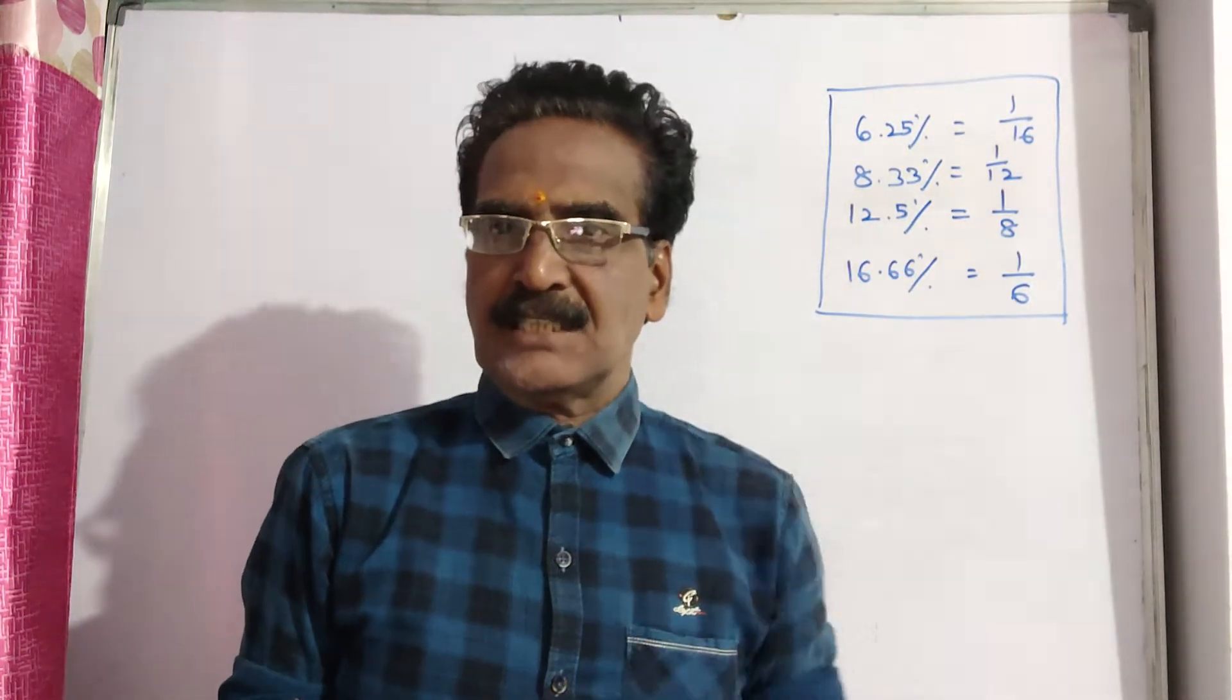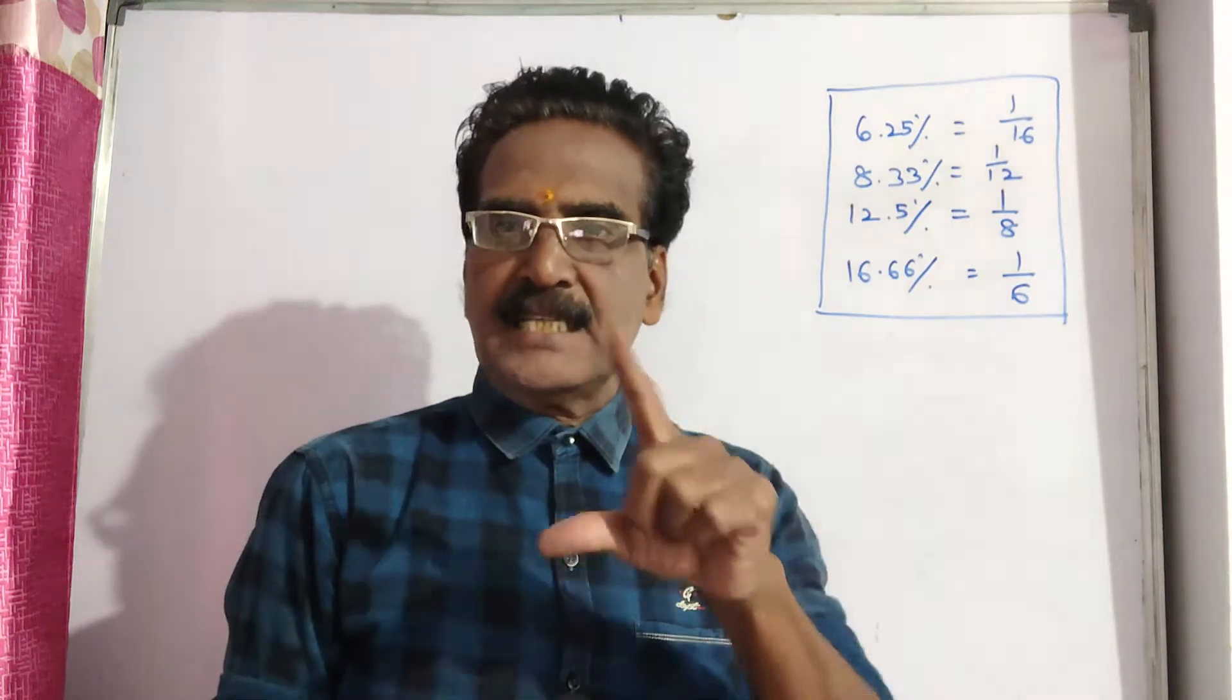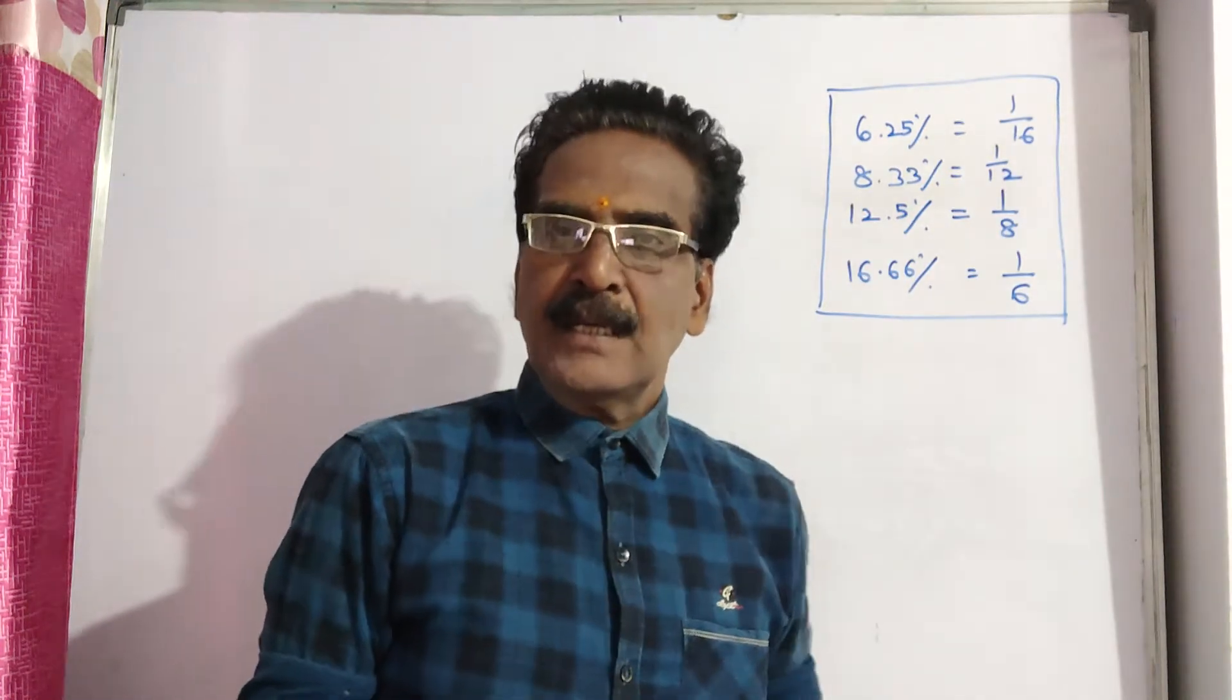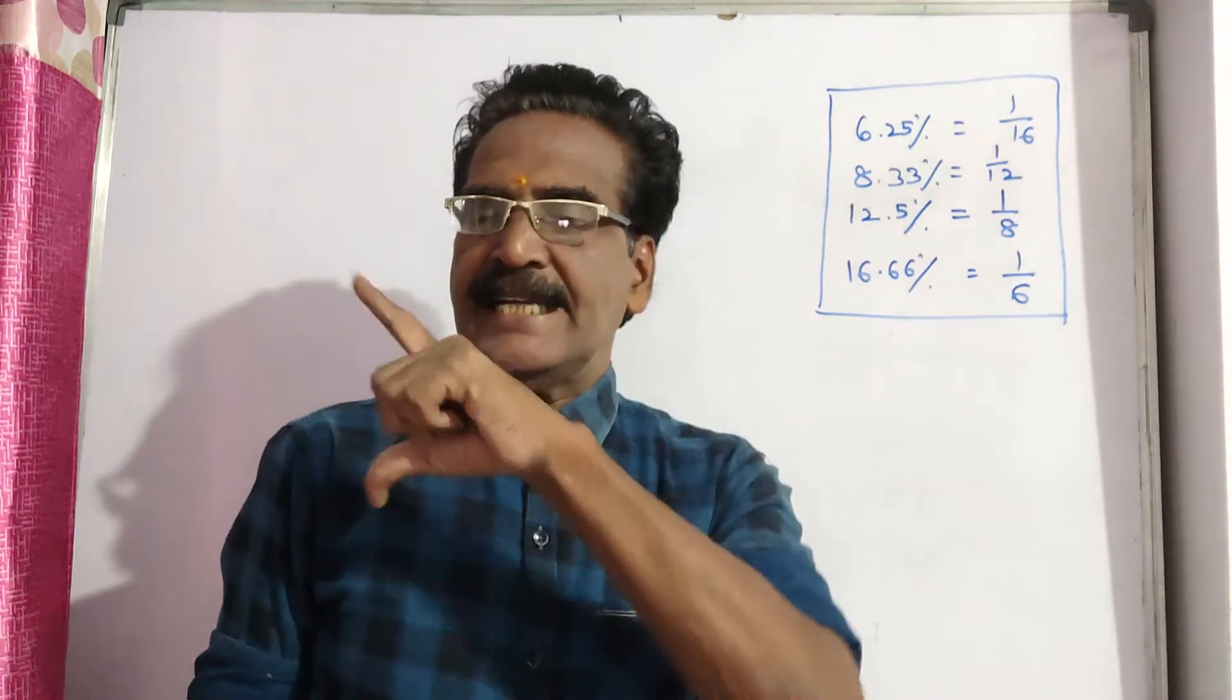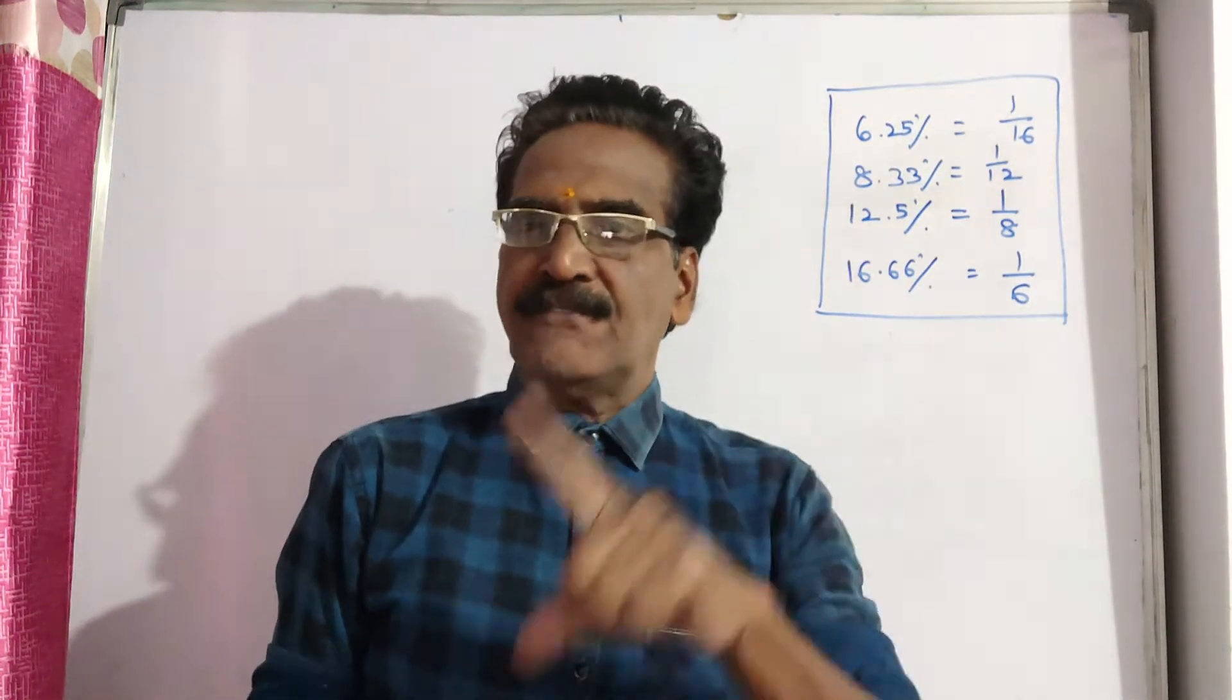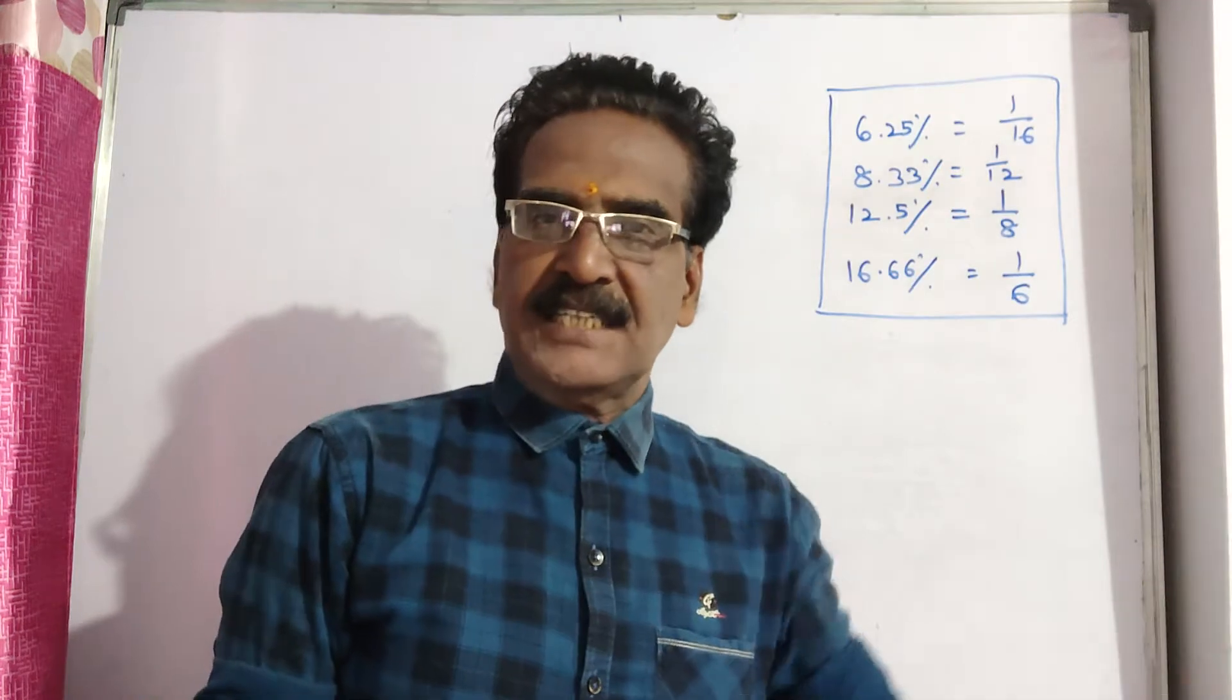Friends, after two successive discounts, a shirt with a list price of Rs. 150 is available at Rs. 105. If the second discount is 12.5%, what was the first discount?